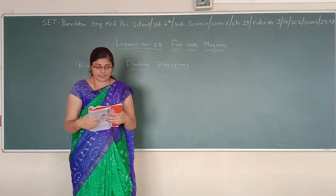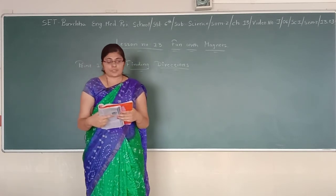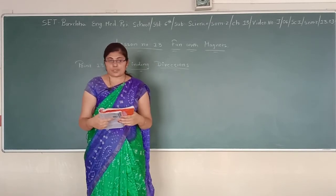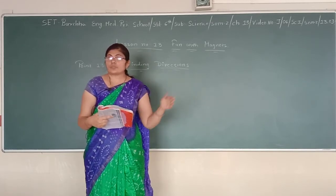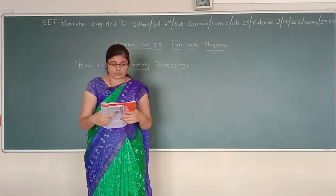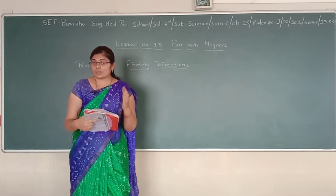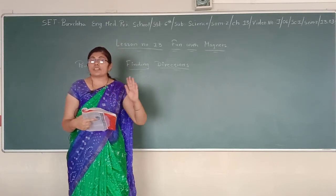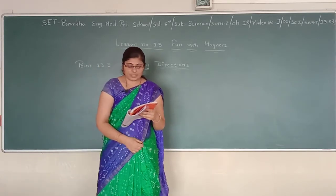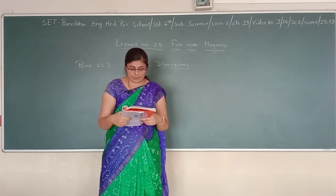Rotate the magnet in another direction and note the final direction in which it comes to rest. Do you find that the magnet always comes to rest in the same direction? Yes, it always comes to rest in the same direction. Now you can guess the mystery behind the statue in the emperor's carrier — why it always comes to rest in the south direction. Repeat this activity with an iron bar and a plastic or wooden scale instead of a bar magnet.